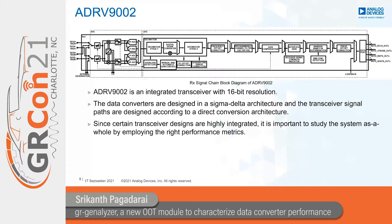User configuration of the ADRV9002 transceiver signal chain is done through stream and filter profiles, which contain parameters such as bandwidth, sample rate, and AGC settings. Based on these profiles, calibration is performed both at startup and in the background. We are now going to consider one-tone and two-tone tests using ADRV9002 to demonstrate how GR Generalizer can compute certain key metrics.